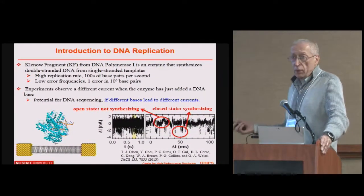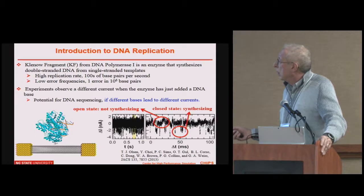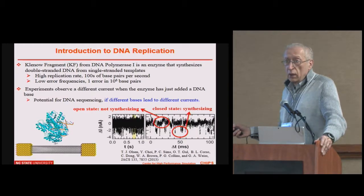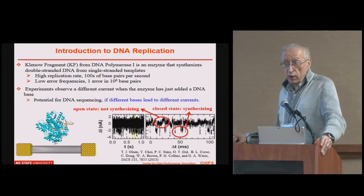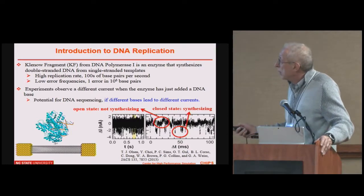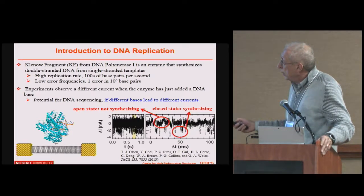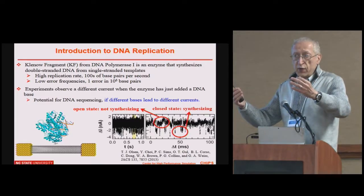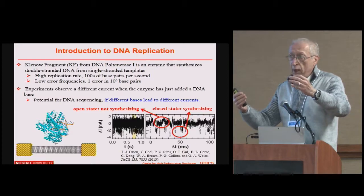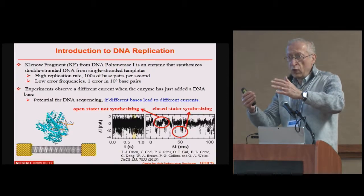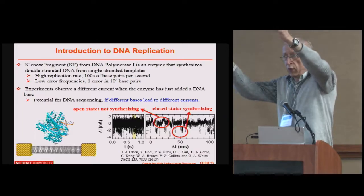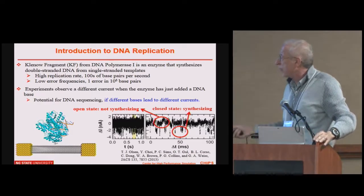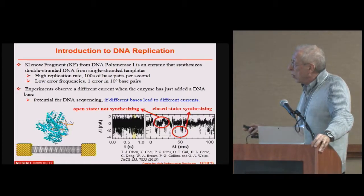Now let's turn to applications. The first application is trying to monitor DNA replication and potentially use it to sequence DNA. There is an enzyme called polymerase I, and the Klenow fragment of it will replicate a single-strand DNA by grabbing a complementary base pair, attaching it, moving up, and attaching the next one — replicating very fast with a high repetition rate and very few errors.